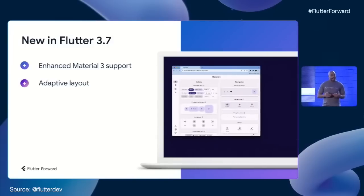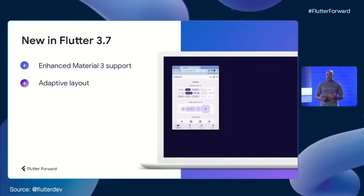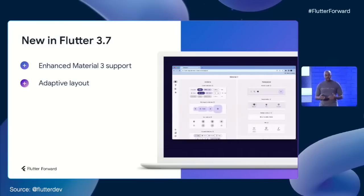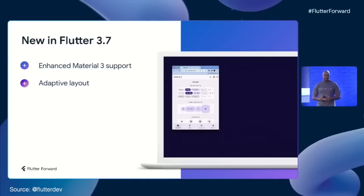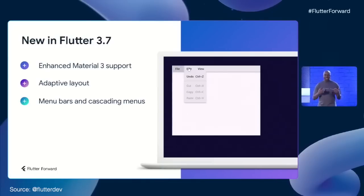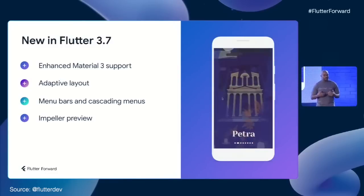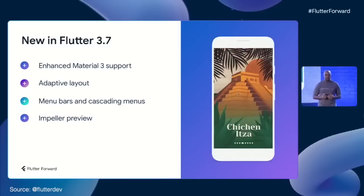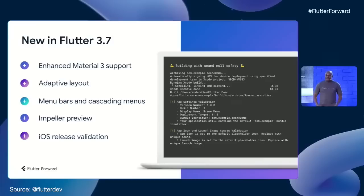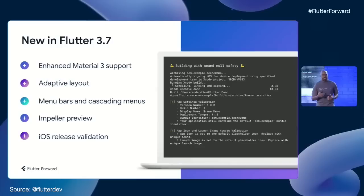We have Adaptive Layouts, which enables your app's UI to automatically scale to look great on various screen sizes. We've got Menu Bars and Cascading Context Menus, which are fully customizable to your app's needs. We've made Impeller, which is the graphics rendering engine that we've been building, available now as a preview for iOS versions of your app. And to help you with the iOS app release process, the tool now validates some of the settings that you need to be configured before you actually submit to the App Store.